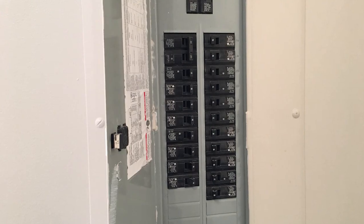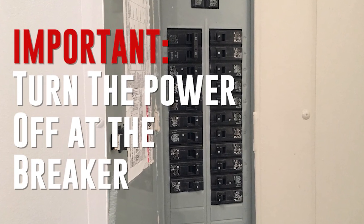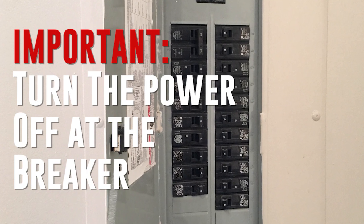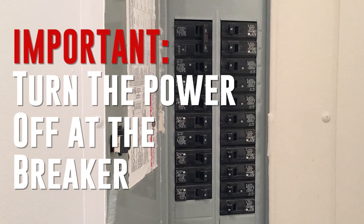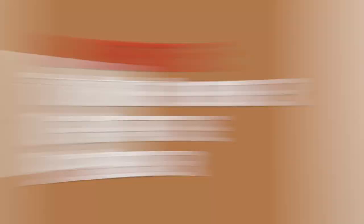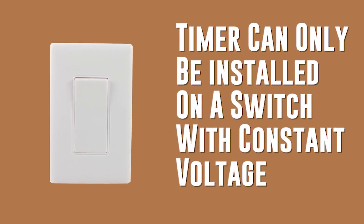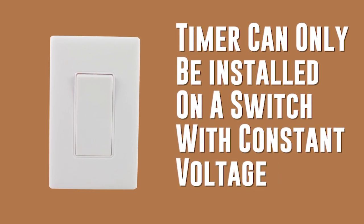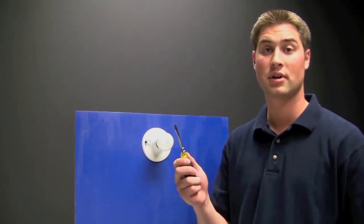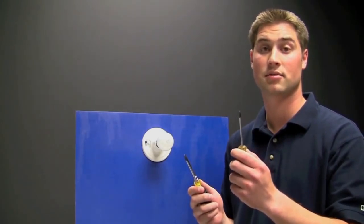Before we get started there's a couple things I wanted to cover. Before working on any electronic circuit it's important to turn the power off at the breaker before you start working. Please know that you can only install the timer on a switch with constant voltage. Additionally to install the timer we're going to need a couple tools. We'll need a flat blade screwdriver as well as a Phillips head screwdriver.